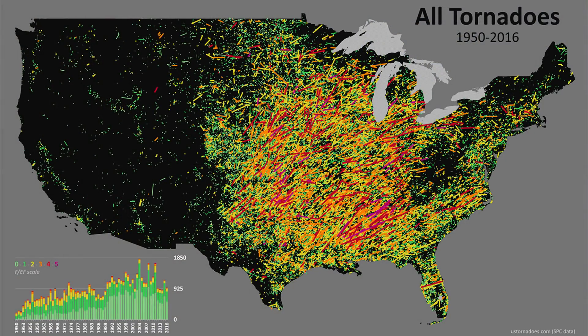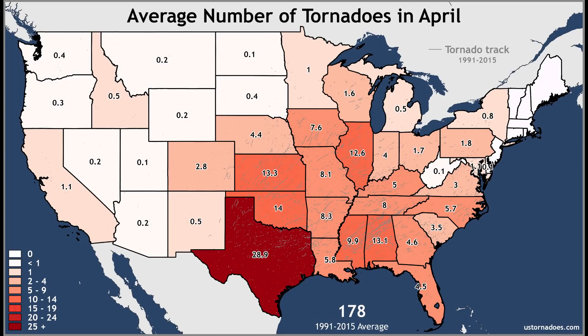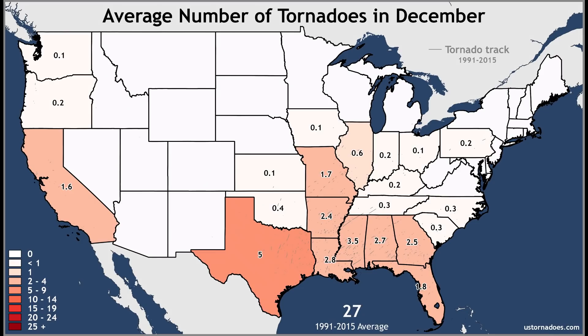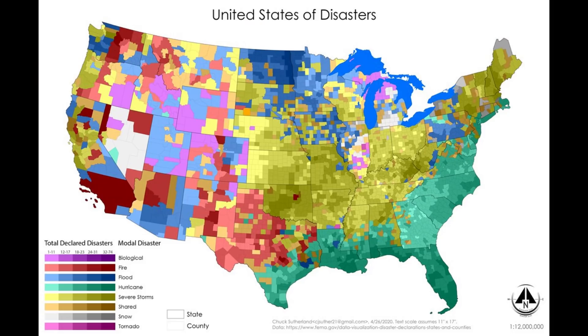The time of year where you see the most tornadoes is also not distributed evenly. In spring you're going to see the most in the south and the southern plains. It can still be pretty cold in April in the upper Midwest. But by July it's definitely shifted toward the upper Midwest. You see very few tornadoes in the southeast in July because there isn't much cold front activity in the south during summer. By December you're really only seeing tornadoes in the southeast, and even a couple in California.